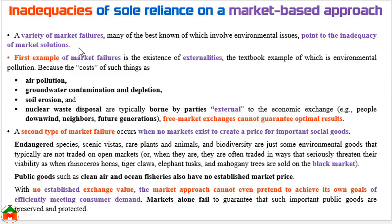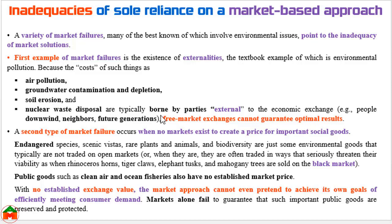The market-based approach has limitations in ensuring environmental sustainability. The first failure is that it does not consider the existence of externalities. Externalities means the people downwind, neighbors, and future generations. When a business causes air pollution, groundwater contamination and depletion, soil erosion, or nuclear waste disposal, the cost for this pollution is borne by external parties — people downwind, neighbors, and future generations — and the free market cannot guarantee optimal results for externalities.